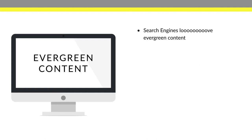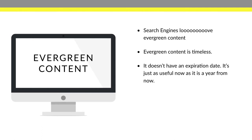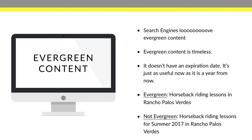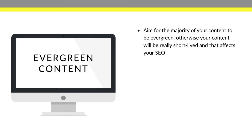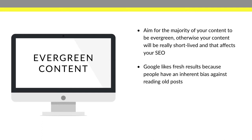Google loves evergreen content — content that is timeless and doesn't have an expiration date. It's just as useful now as it is a year from now. For example, "horseback riding in Rancho Palos Verdes" is evergreen, but "horseback riding lessons in summer 2017 in Rancho Palos Verdes" is not. Make sure the majority of your content is evergreen. If it's not, it will have a short shelf life, which affects your SEO, because Google loves fresh results and people have an inherent bias against reading old posts.